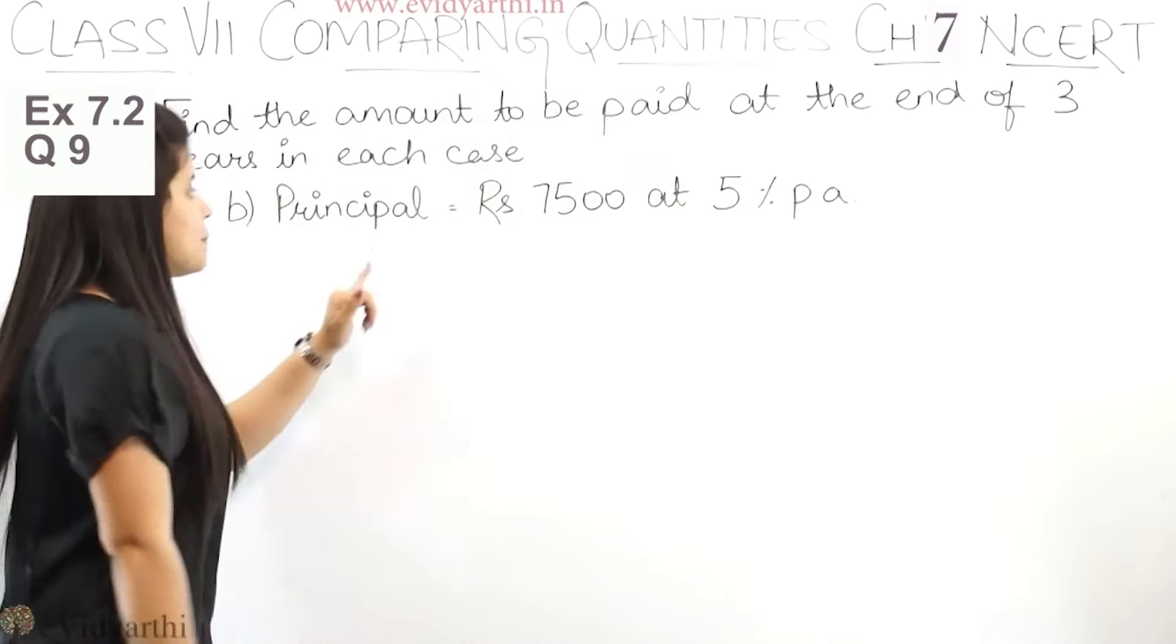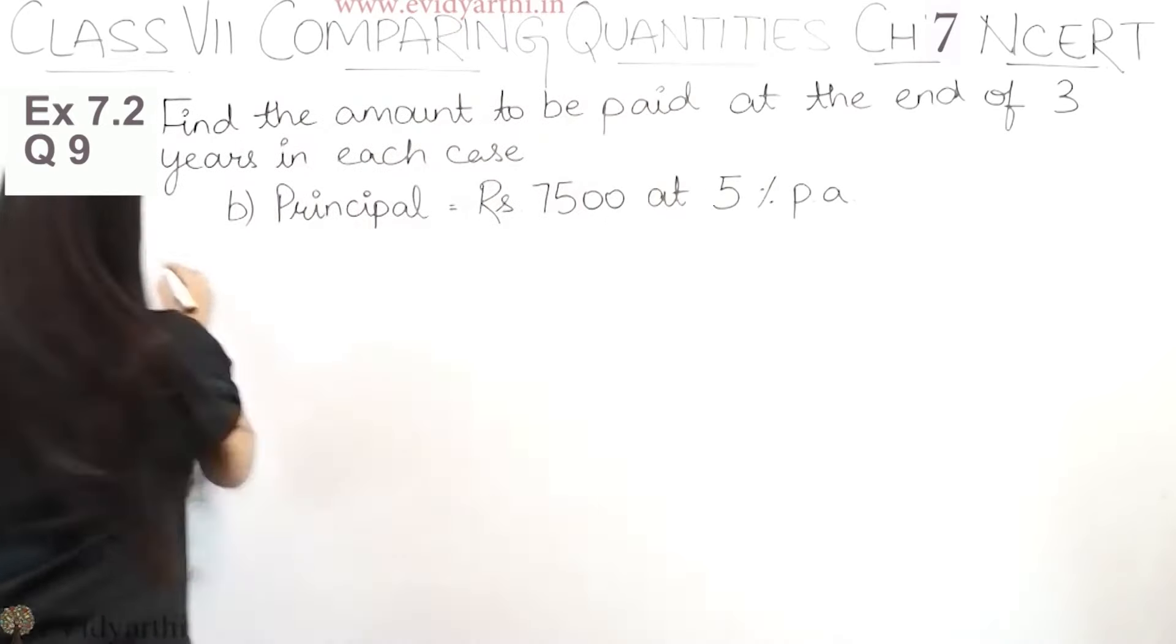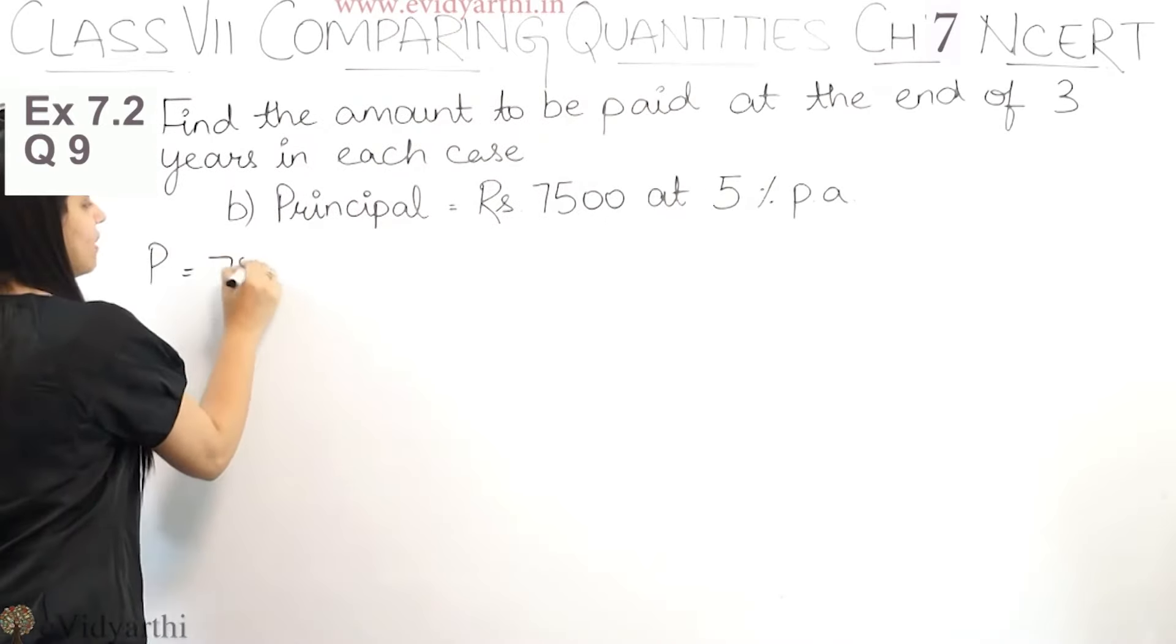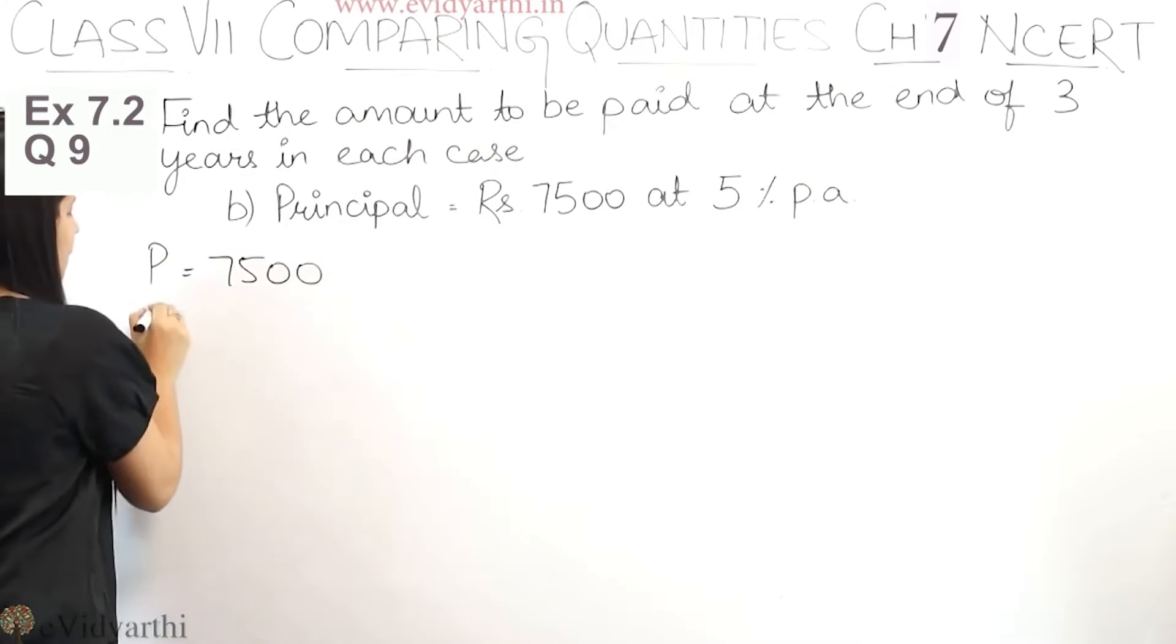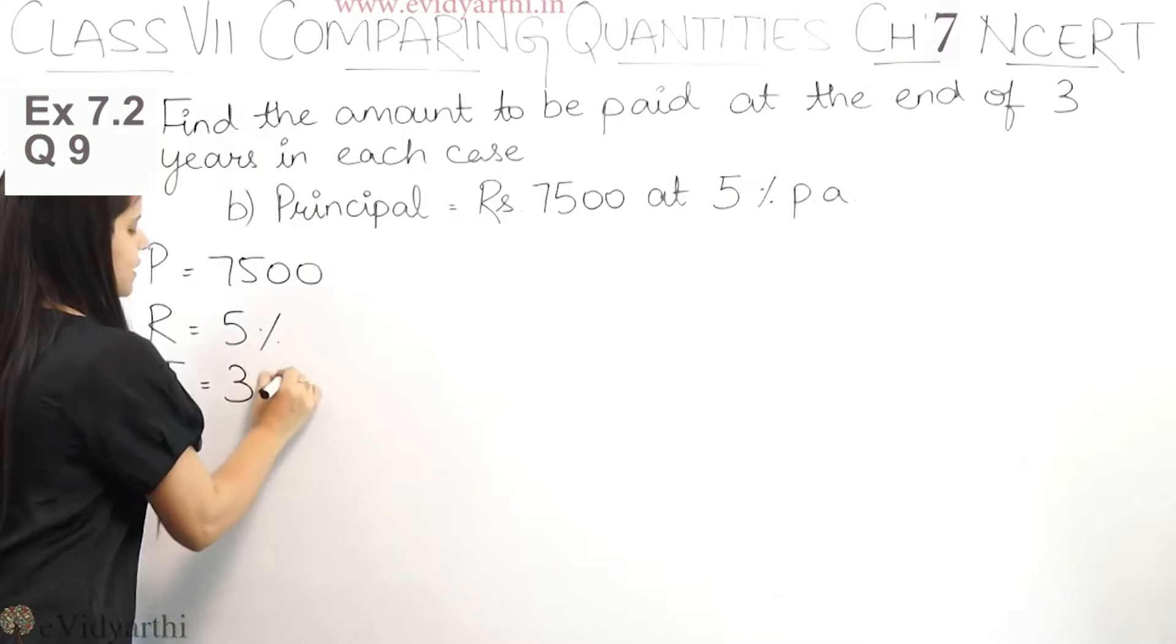So this was the first part. Now let's come to the next part, part B. In part B, principal is 7500 at 5%. So this time principal is 7500, rate given is 5%, and time is same again, that is 3 years.